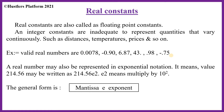The general form of a real constant in exponential notation is: mantissa e exponent. The mantissa is either a real number expressed in decimal notation or an integer. The exponent is an integer with an optional plus or minus sign. The letter e separates the mantissa and the exponent, and e can be written in either lowercase or uppercase.